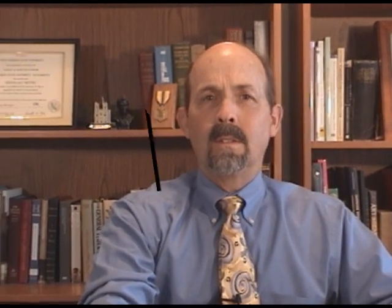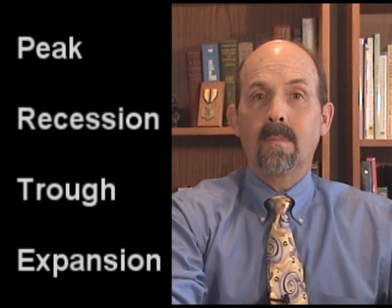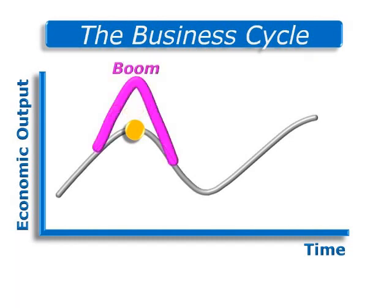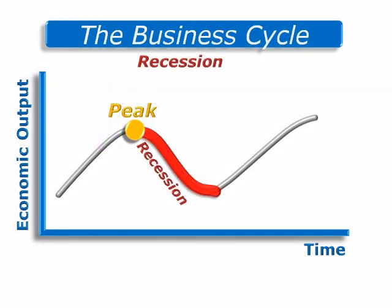A business cycle actually consists of four phases: peak, recession, trough, and expansion. Each business cycle begins with a peak, or the high point of economic activity. An economic boom is an exceptionally high level of economic activity. After the peak, the economy enters a recession when activity slows down.